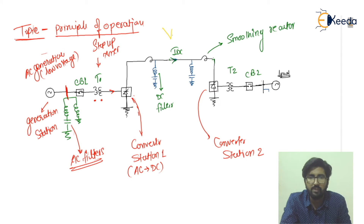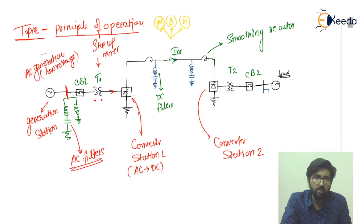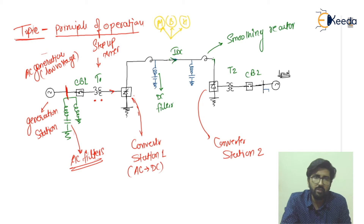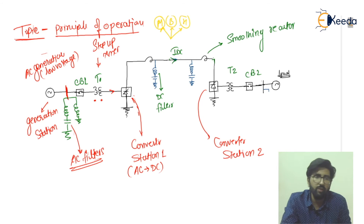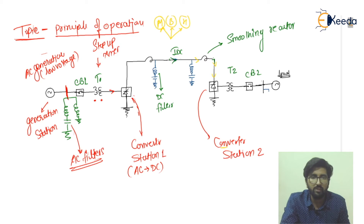The DC is then transmitted over the DC link. There are three types of DC links: monopolar, which has only one link; bipolar, which has two links; and homopolar, which has one link but uses a grounded neutral system.